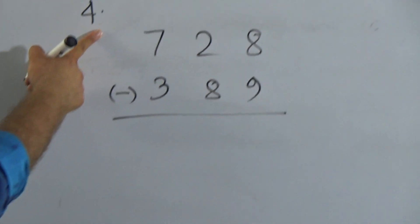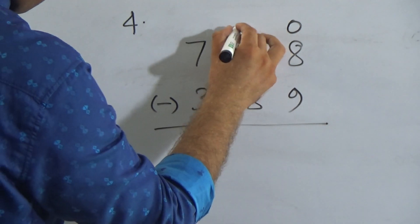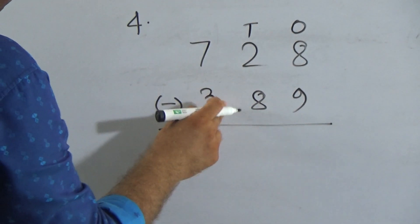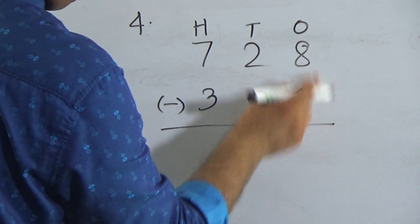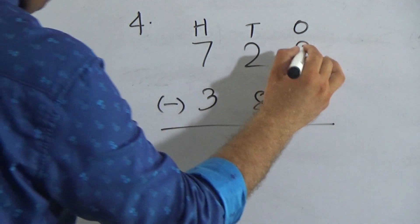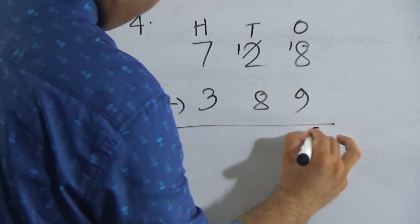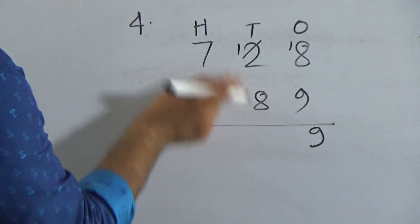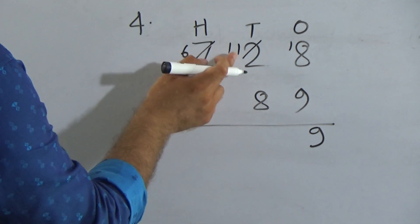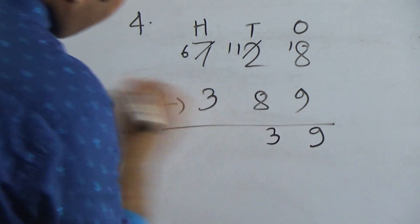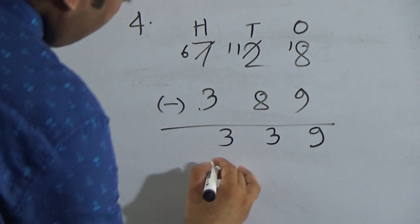Now number 4: 728 and 389. 8 and 9 are in 1's place, 2 and 8 in 10's place, and 7 and 3 in 100's place. 8 is smaller than 9, so after borrowing 1, it makes 18. 9 from 18 is 9. Here is 1, which after borrowing becomes 11. 8 from 11 is 3. And 3 from 6 is 3. So the answer is 339.